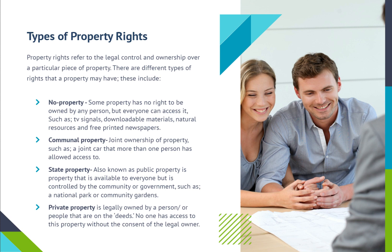Communal property is joint ownership of property, such as a joint car that more than one person has access to. State property, also known as public property, is property that is available to everyone but is controlled by the community or government, such as a national park or community gardens. Private property is legally owned by a person or people that are on the deeds. No one has access to this property without the consent of the legal owner.